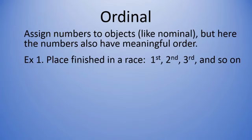For example, the place someone finishes in a race—first, second, third, and so on. If we know the place they finished, we know how they did relative to others. The first place person did better than second, second did better than third, and so on. That number they're assigned indicates how they finished in a race, so it indicates order.